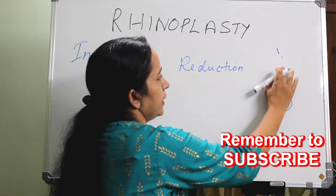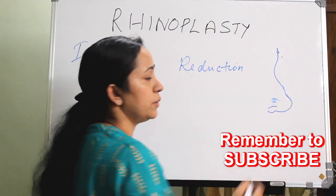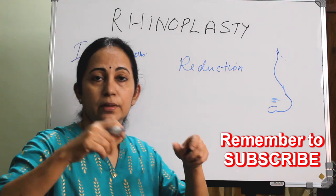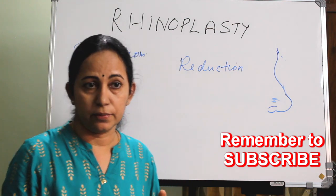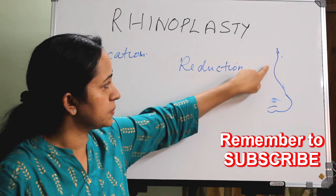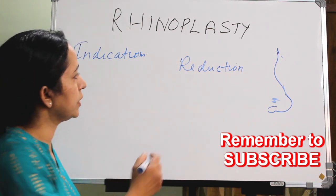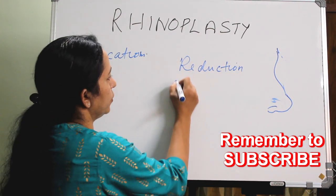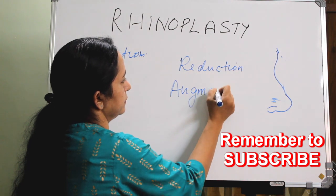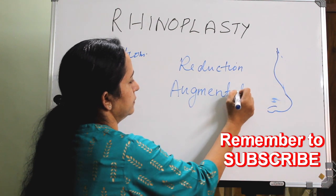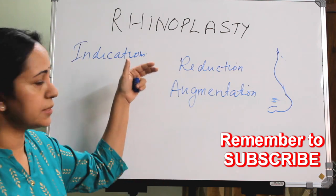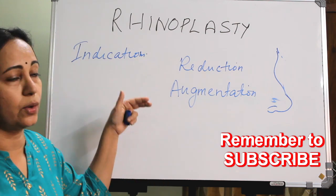If it is a saddle nose — the shape like a saddle on a horse when riding — that is called a saddle nose. In that case we do an augmentation rhinoplasty. So extensive or elaborate reduction and augmentation is one indication.